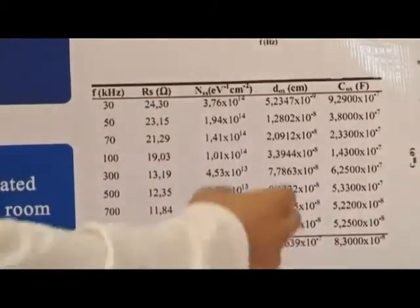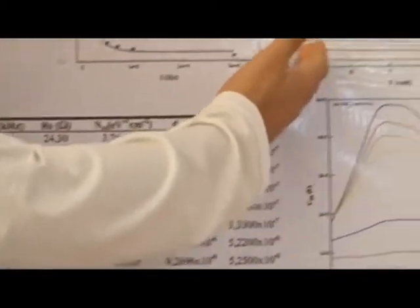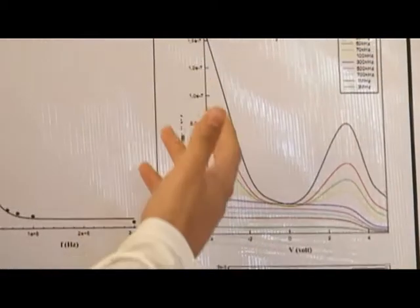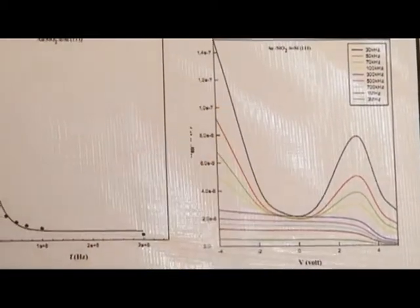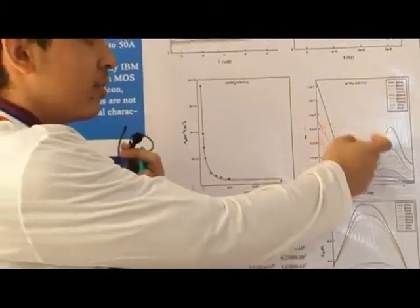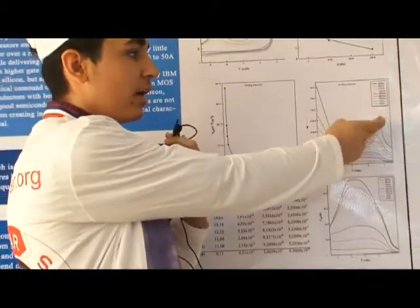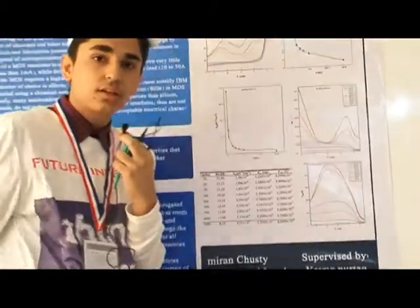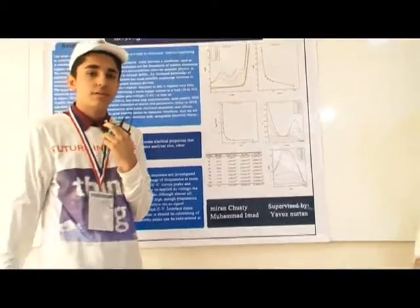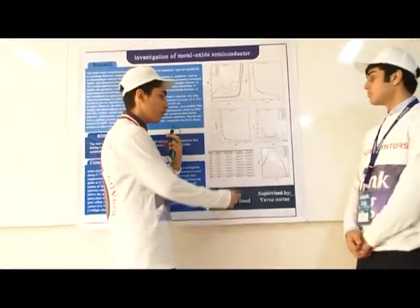The second graph is conductivity. Resistance and conductivity are inversely proportional — the lower the frequency, the higher the interface state effect.